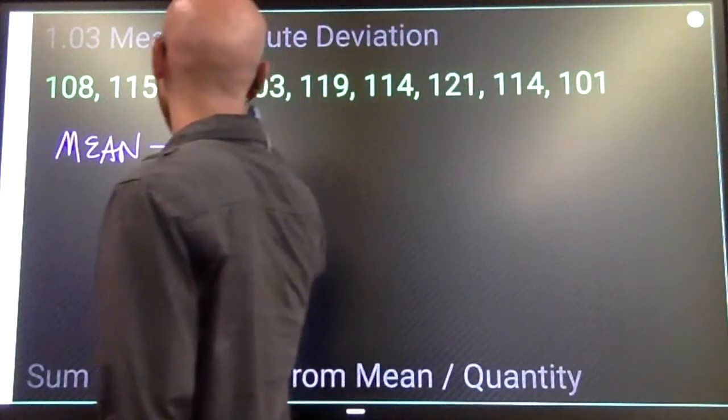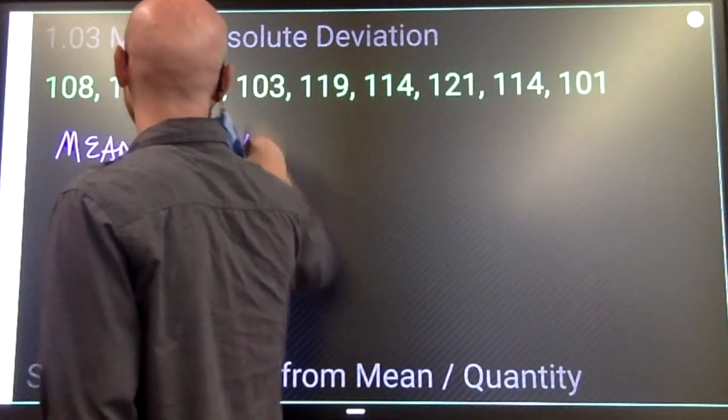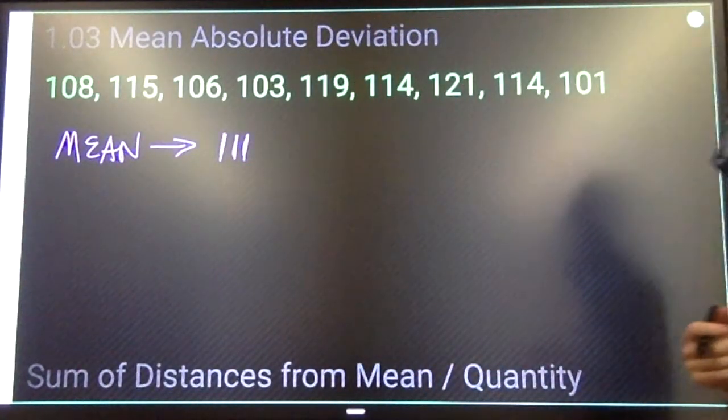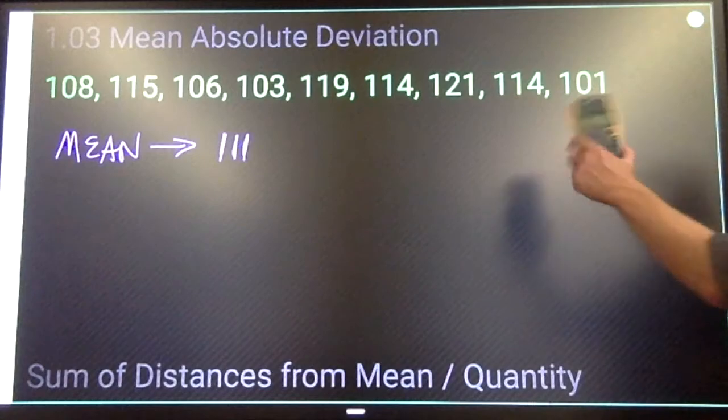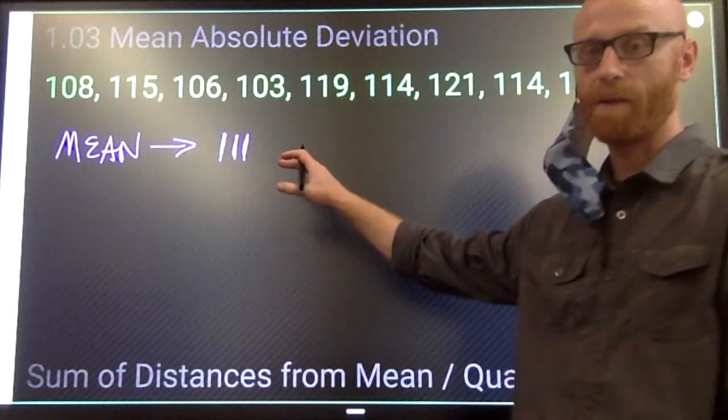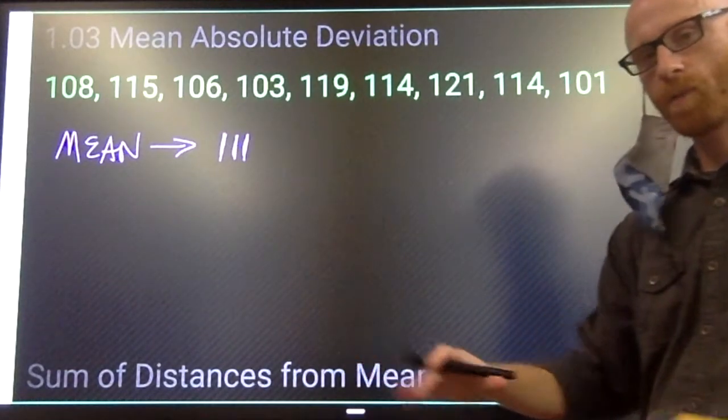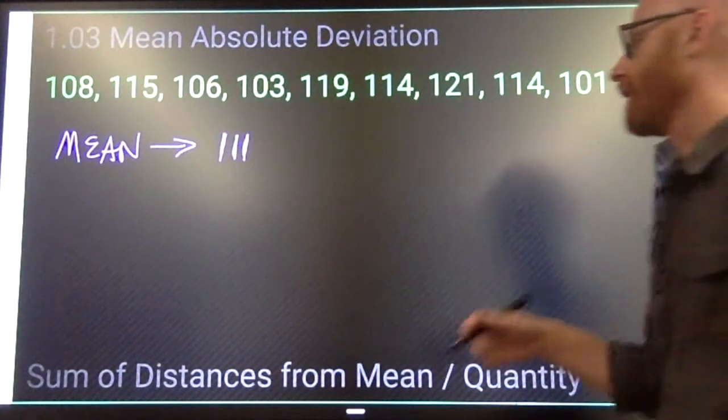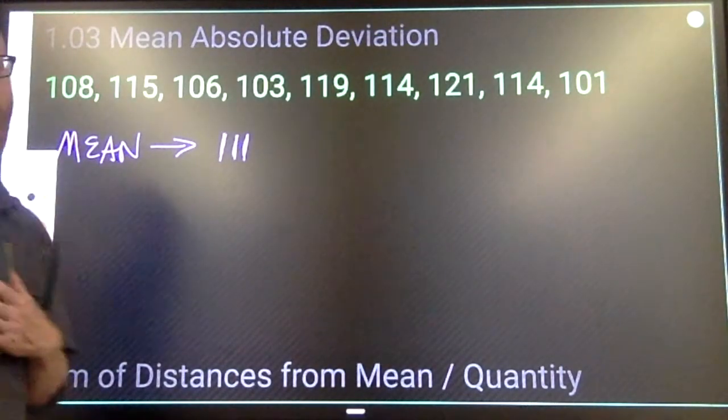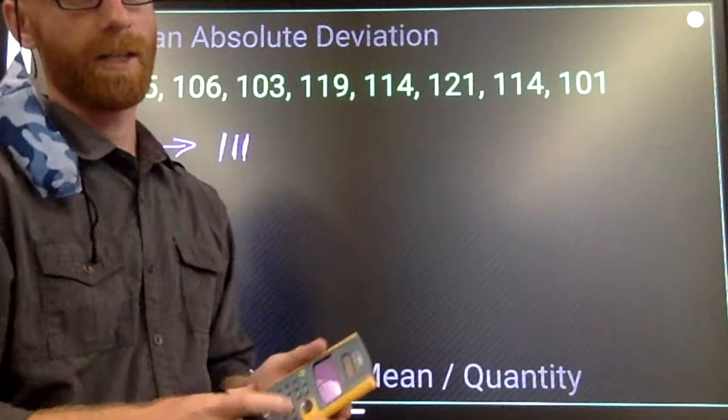For this topic, mean absolute deviation, I will let you round to the nearest whole number, so we're gonna call this 111 and remove all the decimal spaces. Only because the next move that you have to make involves a bunch of subtractions, and I would prefer that you're doing them in your head rather than using a calculator.